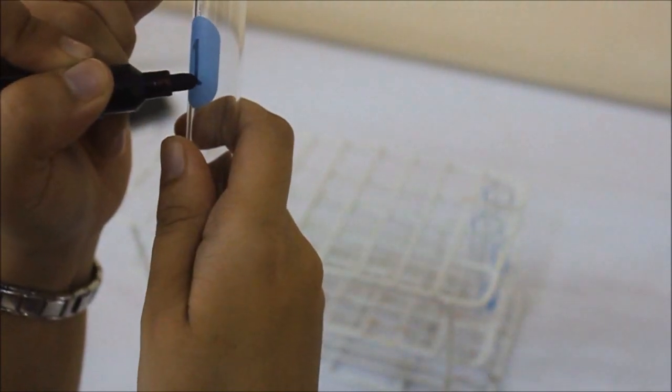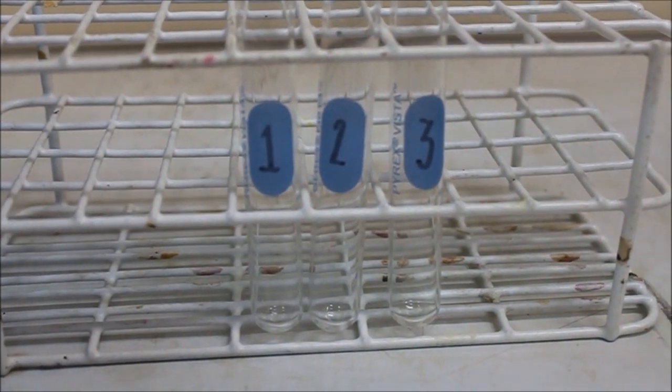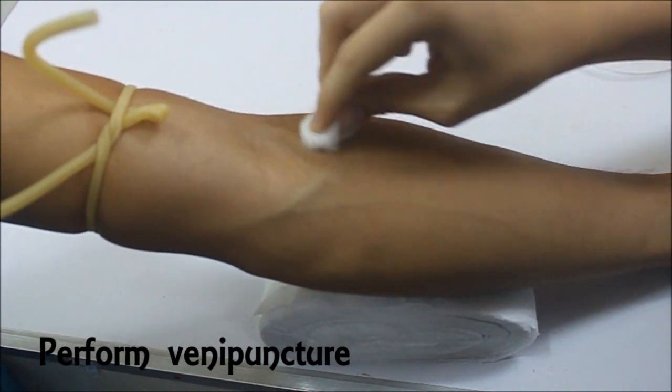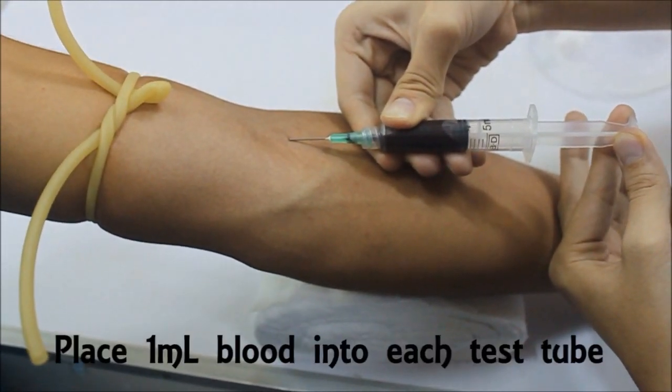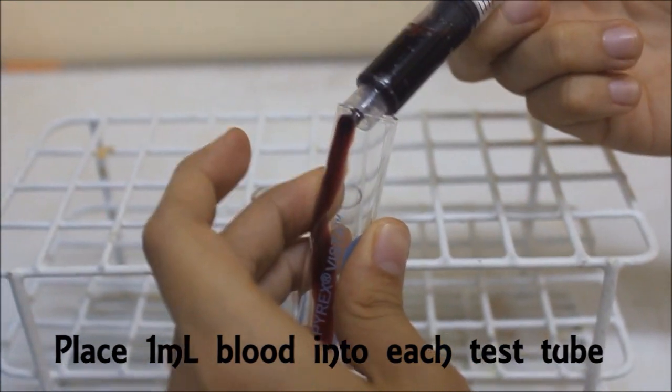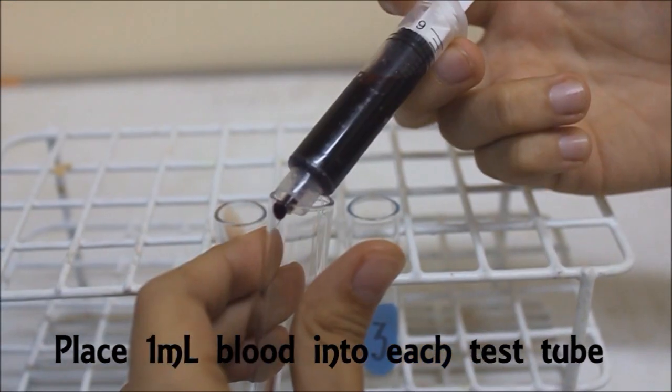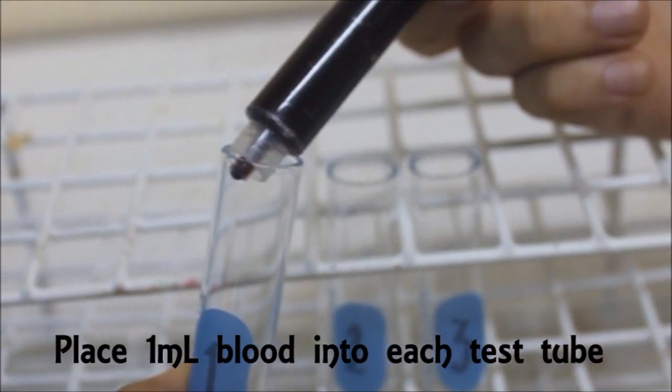First, prepare three clean test tubes and label each as test tube 1, 2, and 3. Perform venipuncture and collect 4 mL of blood. Carefully place 1 mL of blood in test tube number 3, in test tube number 2, and in test tube number 1.